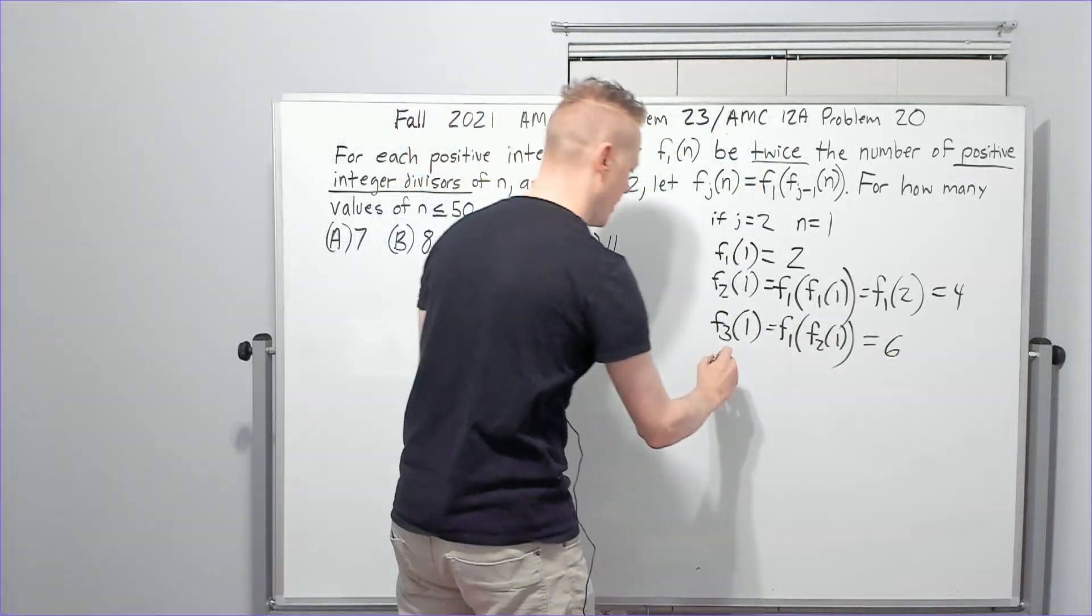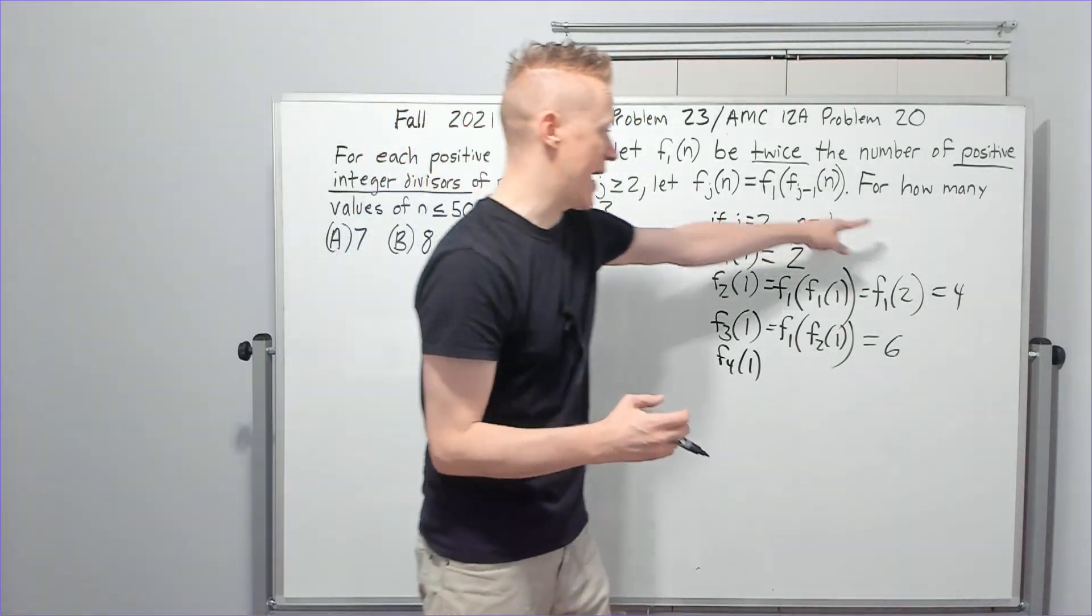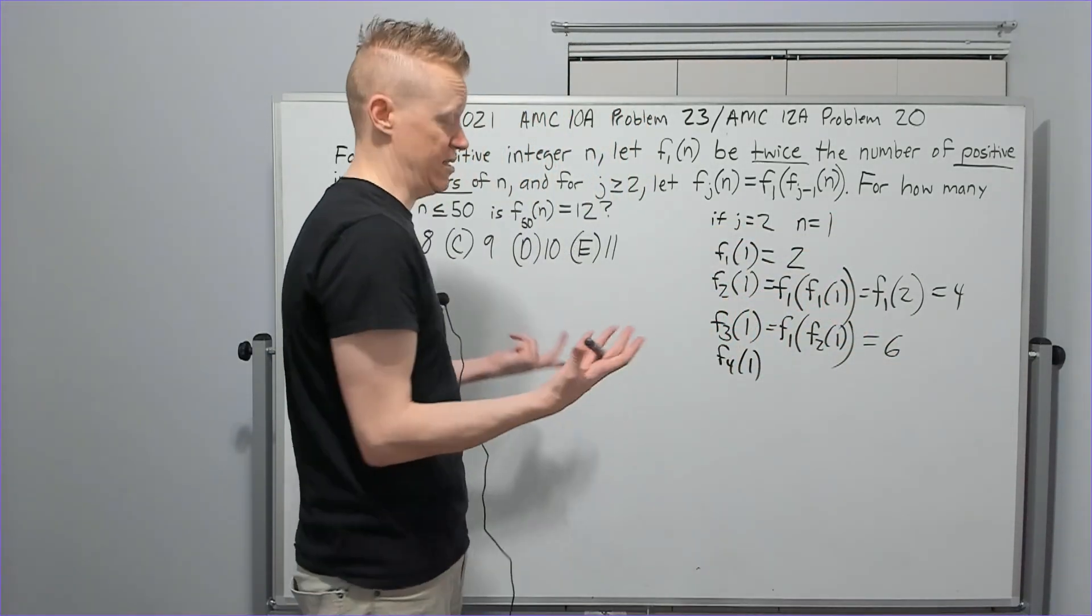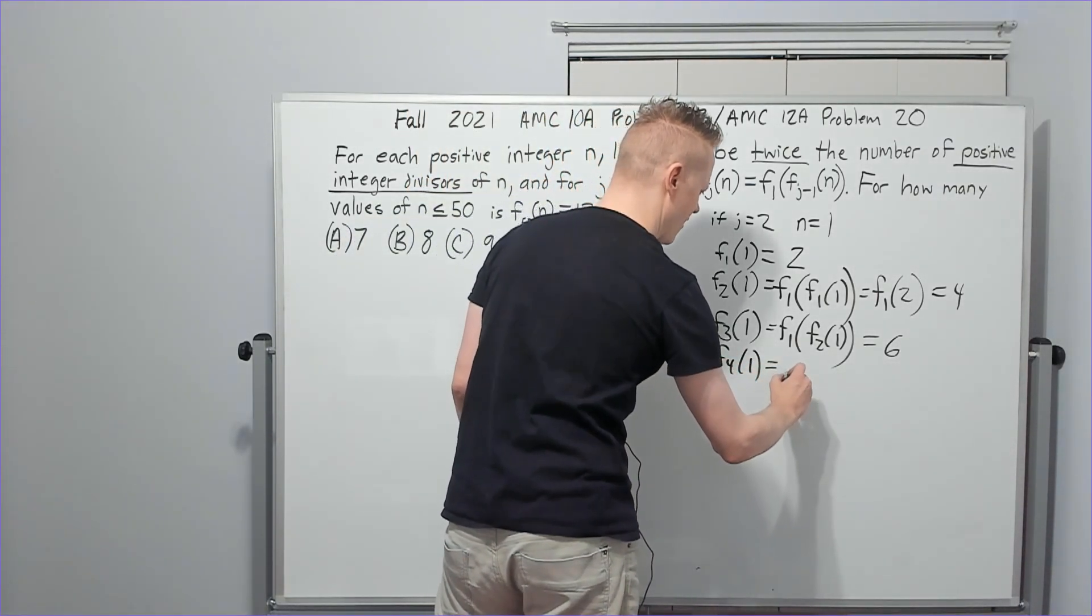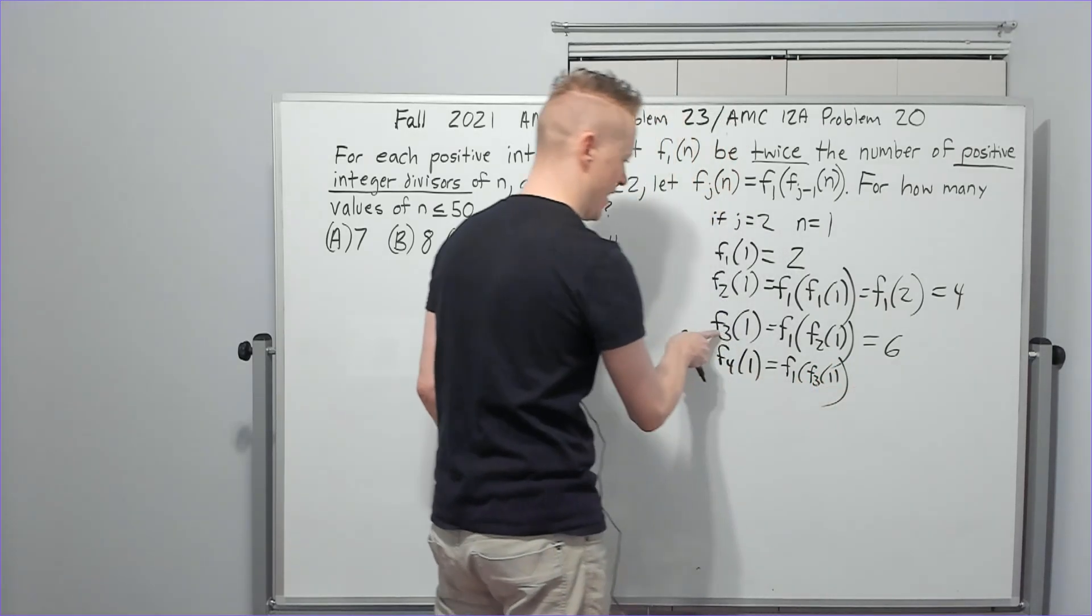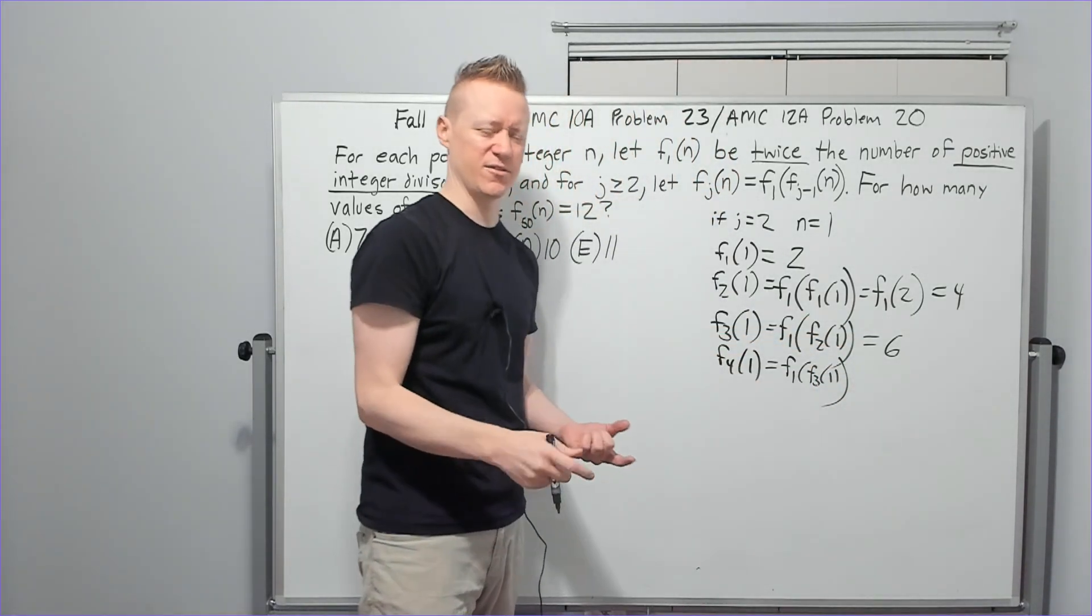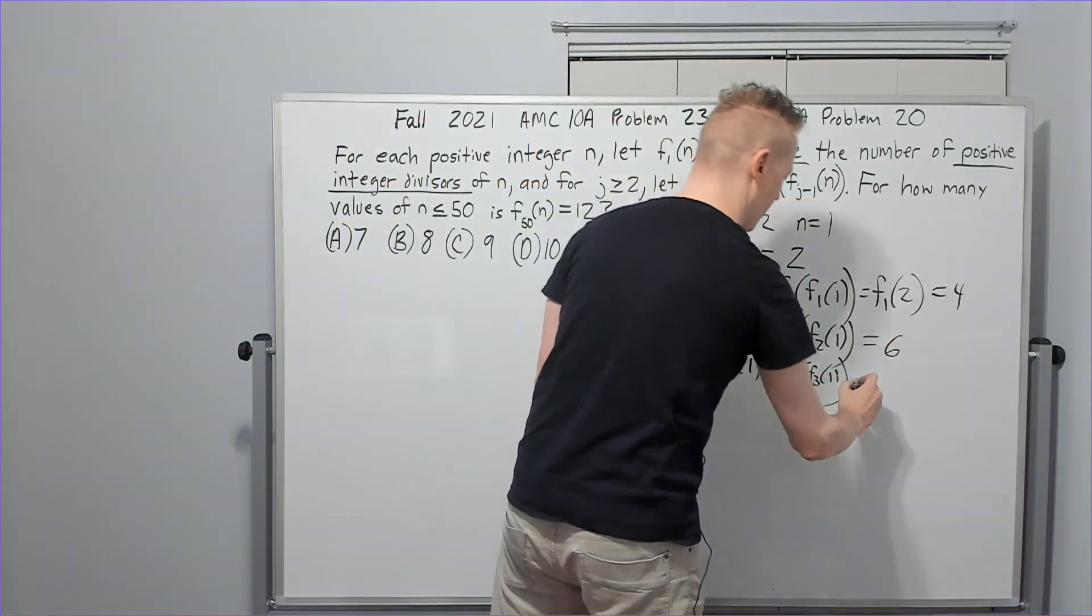Okay. All right. f sub 4 of 1. Again, we're not seeing anything yet. Maybe we're just adding 2 every time, right? Maybe. Just see what happens. f sub 4 of 1 equals f sub 1 of f sub 3 of 1, and f sub 3 of 1 is 6. What are the divisors of 6? 1, 2, 3, and 6. There's four divisors. We want twice that number. We want 8.